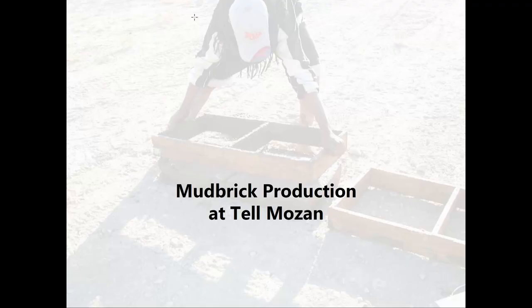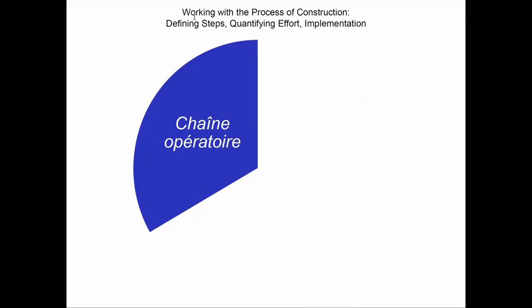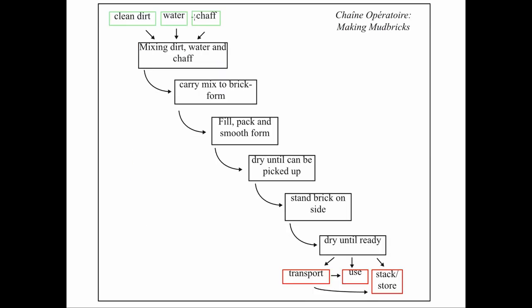To give you a specific example, let's use mud brick production. First, we have the chain operatoire, where one sees the various steps: mixing, pairing, hacking the form, and so on.